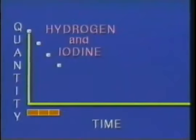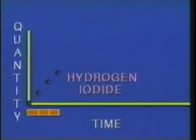Just how does this model explain dynamic equilibrium? Initially, if there is only hydrogen and iodine, only that reaction can possibly take place. The quantities of hydrogen and iodine drop quickly. At the same time, the quantity of hydrogen iodide increases rapidly. But as the concentration of hydrogen iodide builds, this reaction speeds up. As fewer and fewer hydrogen and iodine molecules remain to react, this reaction slows down.